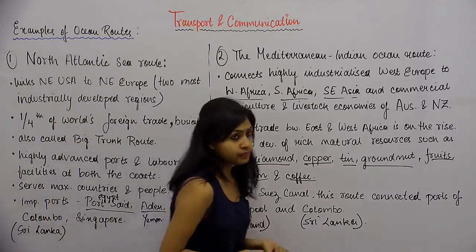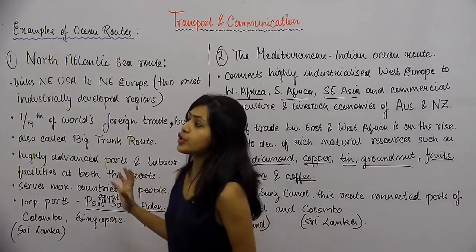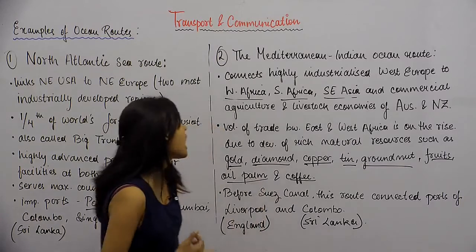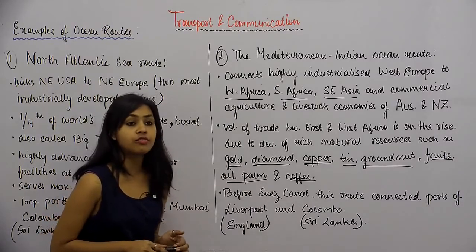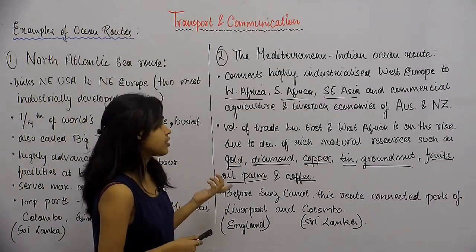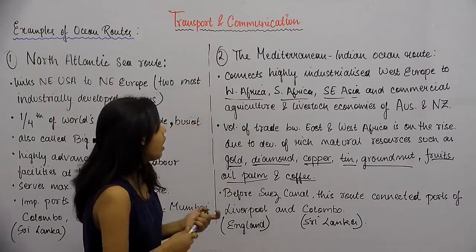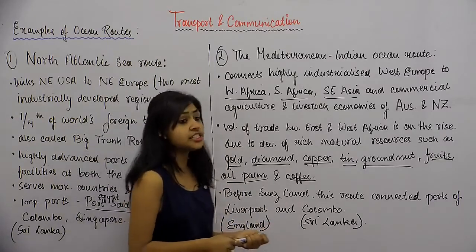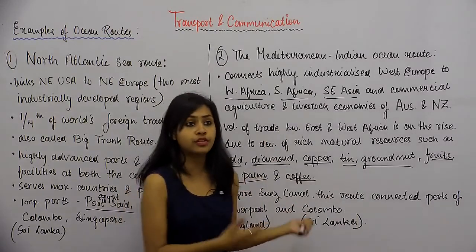So these are the first two examples we studied: the North Atlantic Sea Route, one of the most important and busiest sea routes; and the Mediterranean Indian Ocean route, which has lost significance due to the Suez Canal but is still an important route. You should practice mapping all these ocean routes and know at least the important trading points and ports along each route.